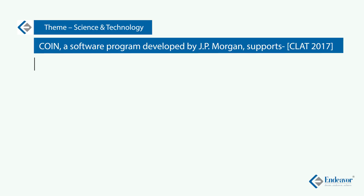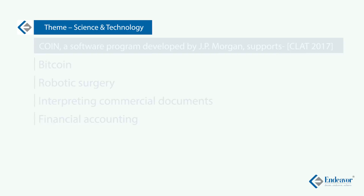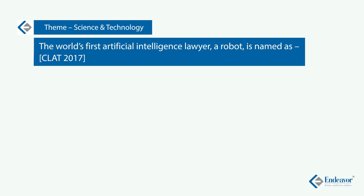There were two questions based on a new software program and a new robot. One question was: 'COIN is developed by JP Morgan — which is a new software program to support which of the following?' And another question was: 'What is the name of the first artificial intelligence robot to help or assist lawyers in their work?' Choices given were IBM Labyrinth, Watson, Boss and Ross. These two were difficult questions, and those who are inclined towards science and technology would only be able to answer these questions.